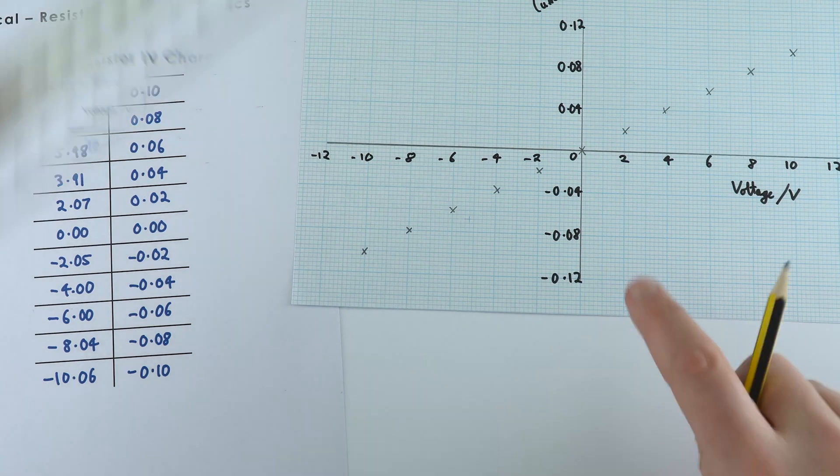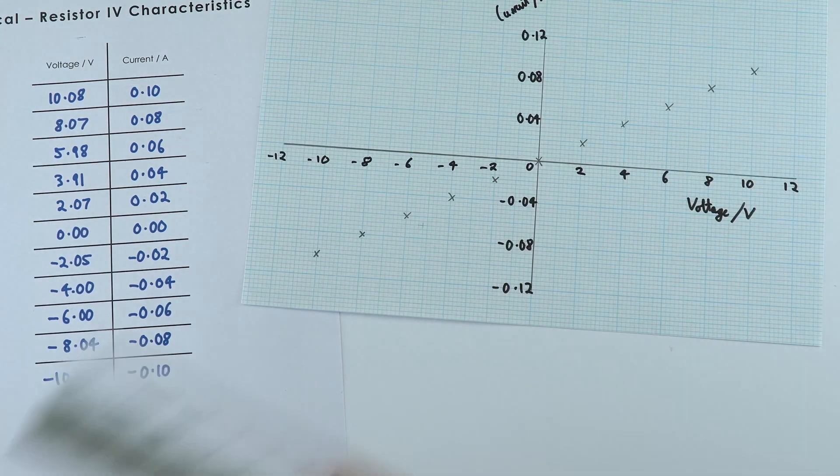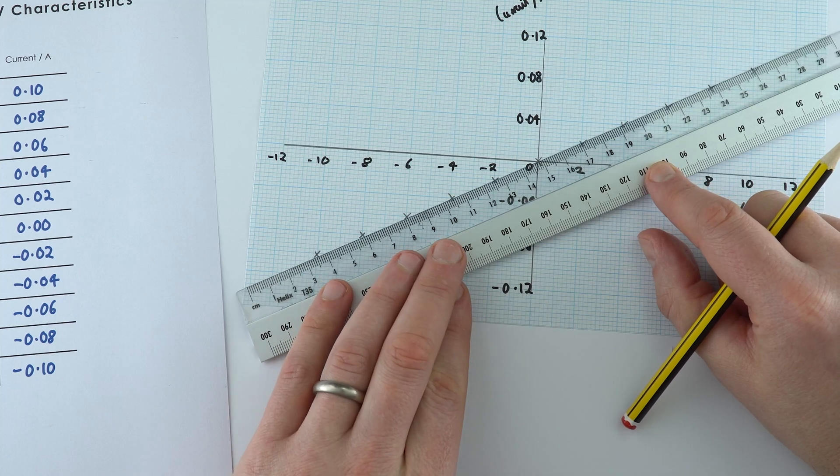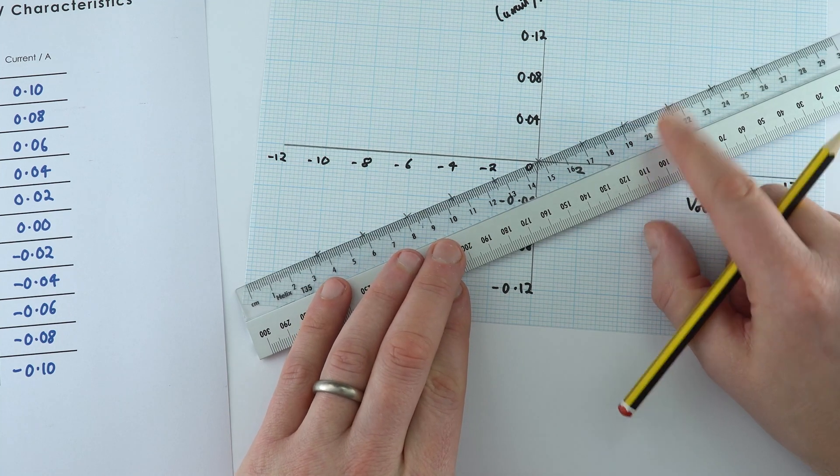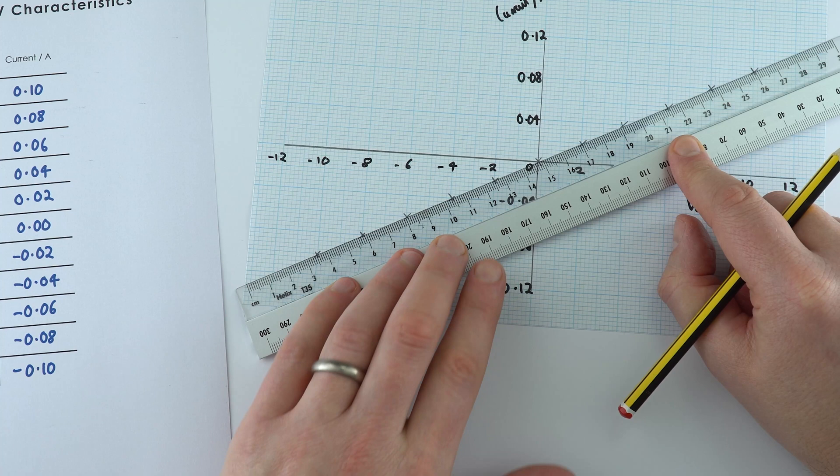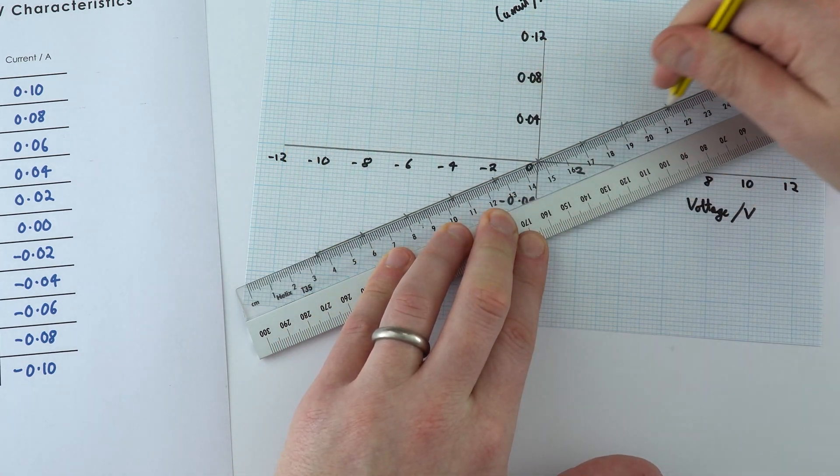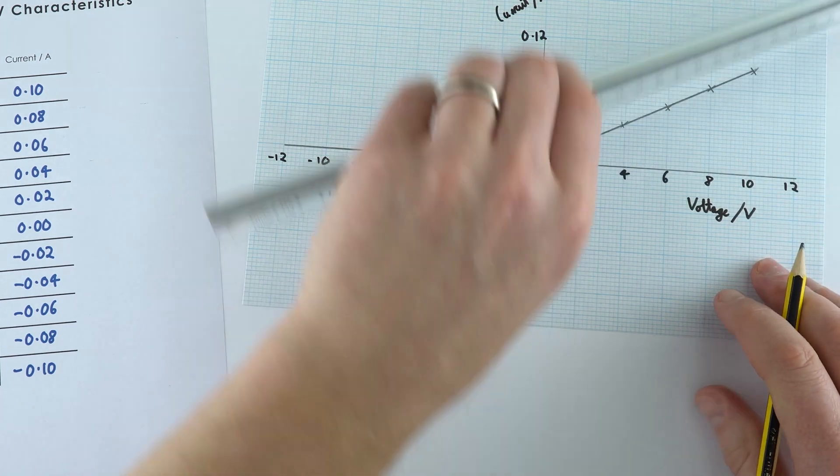We can see pretty clearly there's a good trend, and if I use my ruler to draw in a line of best fit, we can see that this is a really beautiful straight line that goes through the origin.